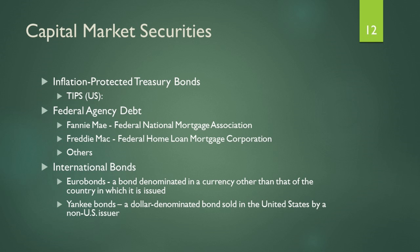Moving outside the US, there are international bonds to familiarize ourselves with. One is Euro bonds — similar to Eurodollars, but with a catch. A Euro bond is any bond denominated in any currency other than the home currency of the issuer. For example, if Singapore issues a bond denominated in Indonesian rupiah instead of Singaporean dollars, that becomes a Euro bond. Similarly, if Indonesia issues a bond denominated in Japanese yen rather than rupiah, that too would be a Euro bond.